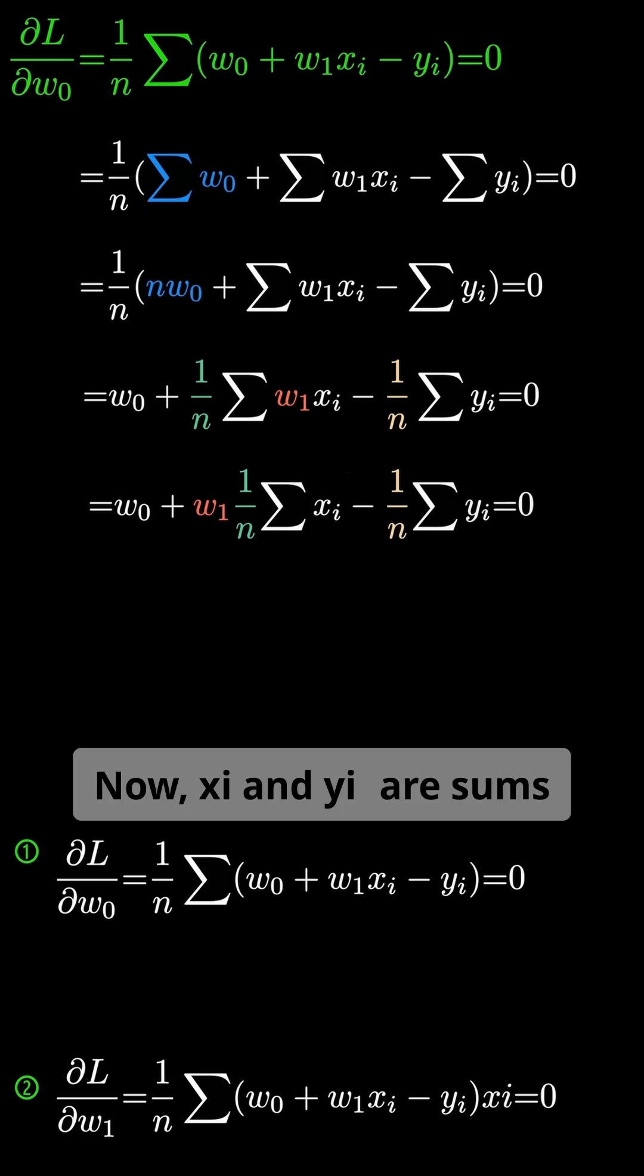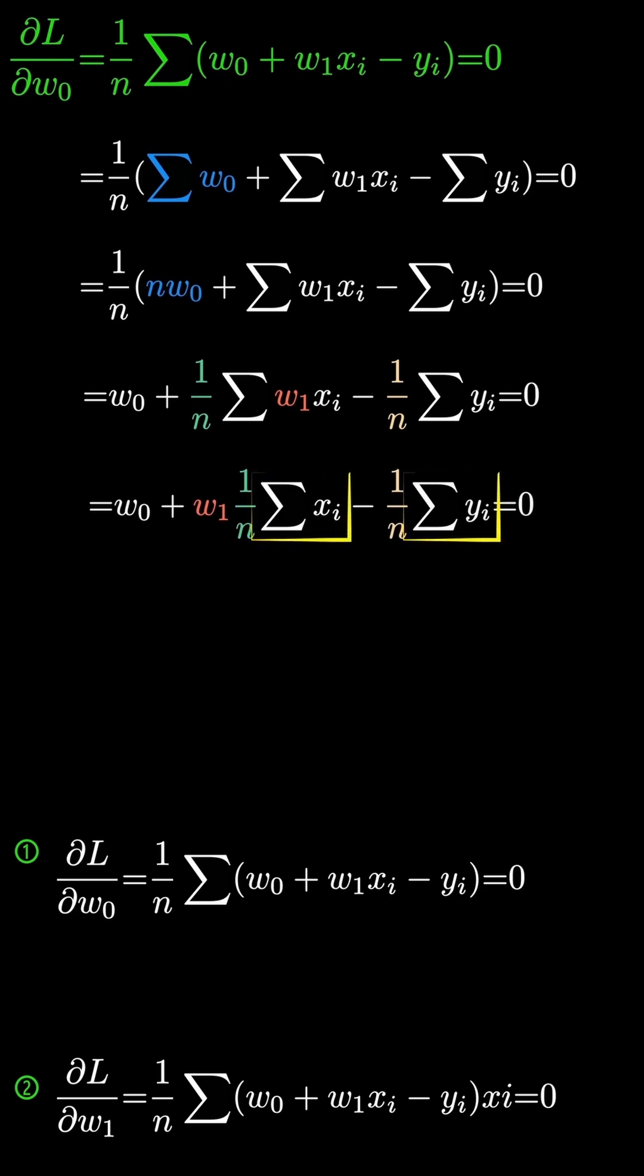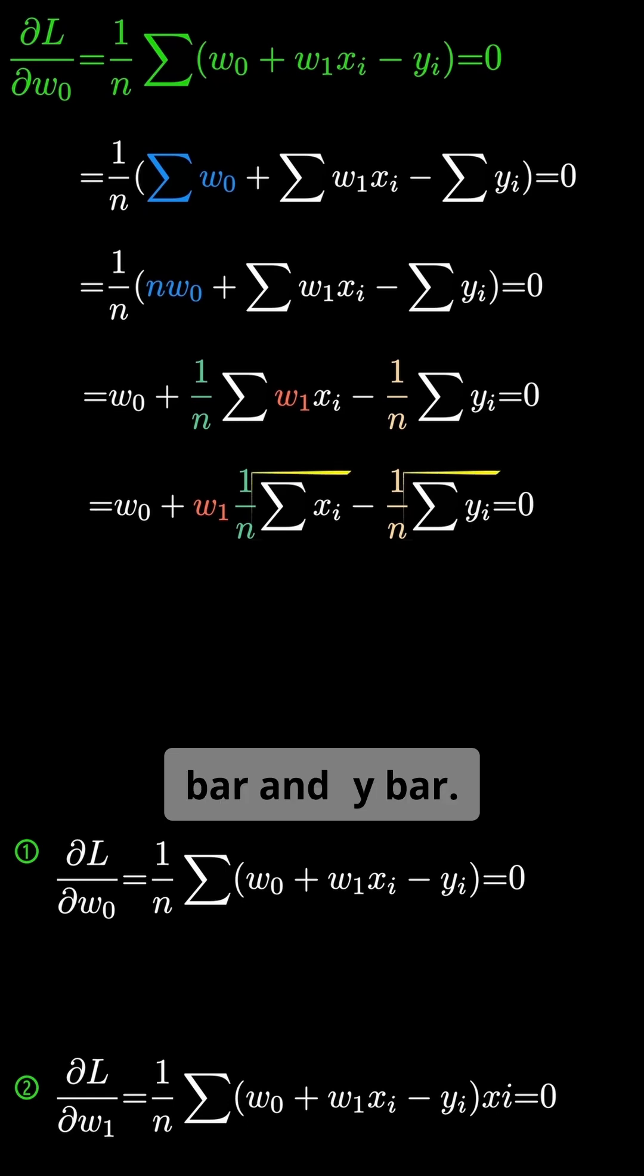Now, xi and yi are sums over n data points, divided by n, which gives the averages, x bar and y bar.